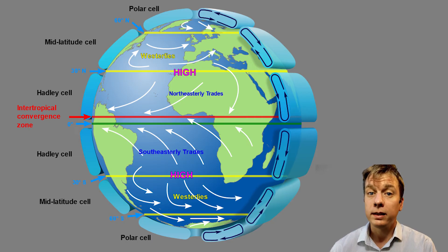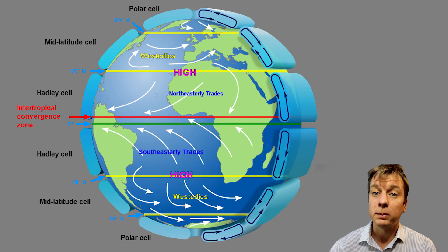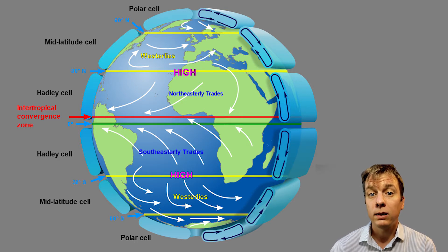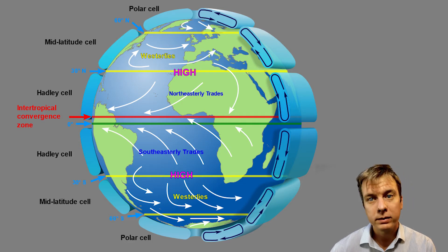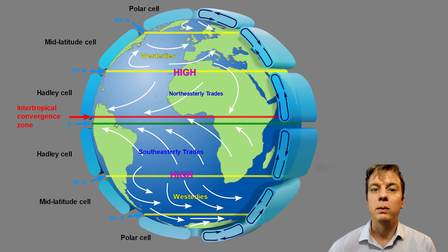Atmospheric circulation leads to wind as well as precipitation, and all of this is what we call weather. The circulation of the atmosphere also has global effects. The rising and cooling of air causes the production of trade winds that blow east to west and westerlies that blow west to east.